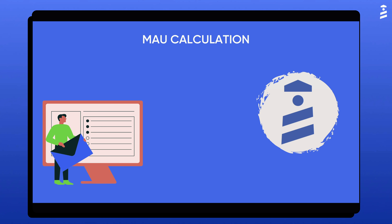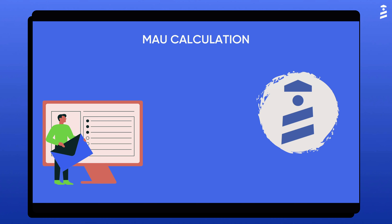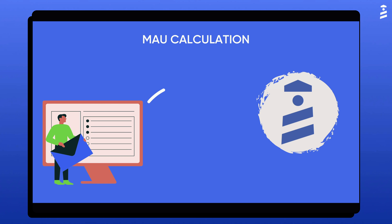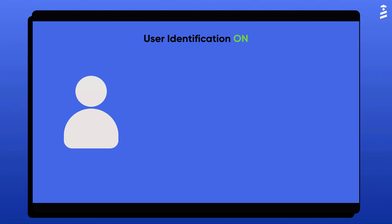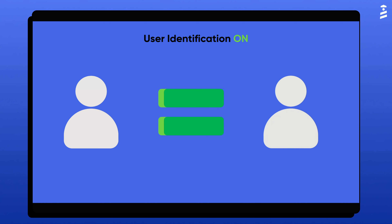Enabling user identification eliminates these possibilities. With this feature, you can send precise user IDs, which cancels MAU dependency on unique browser sessions. Instead, you will define your exact MAU count with the IDs you send UserGuiding.